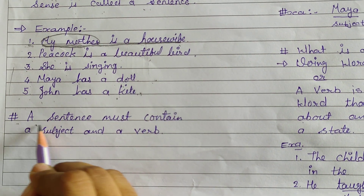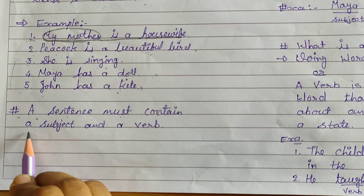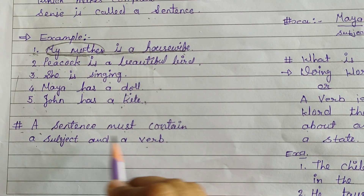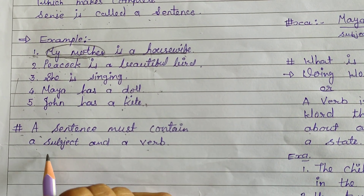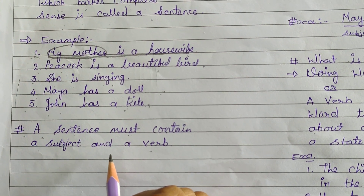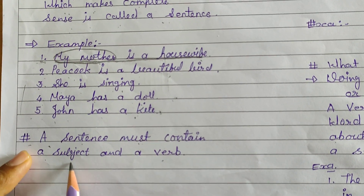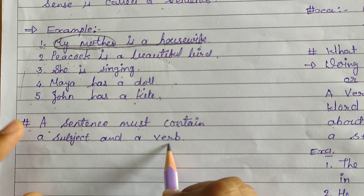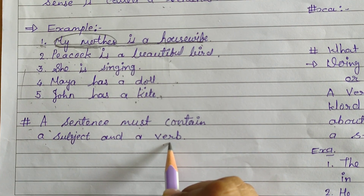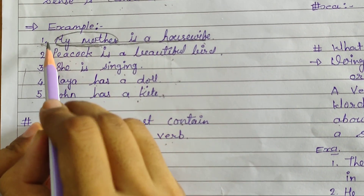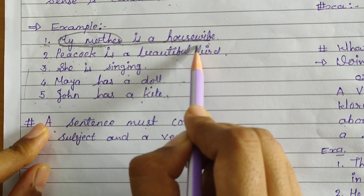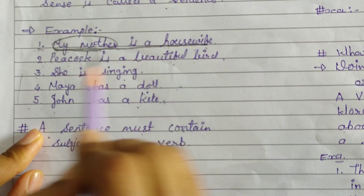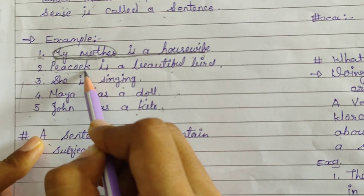Second point: a sentence must contain a subject and a verb. Every sentence must contain a subject and a verb. Like the first example — 'My mother is a housewife' — 'my mother' is the subject. 'Peacock is a beautiful bird' — 'Peacock' is the subject.